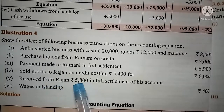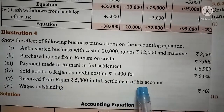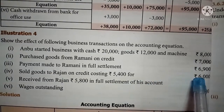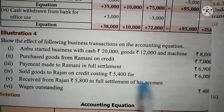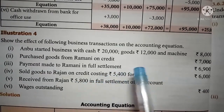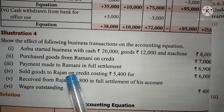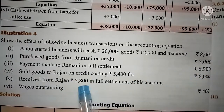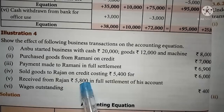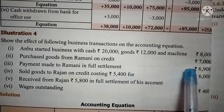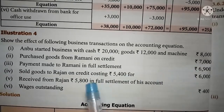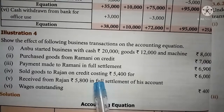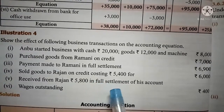Cash is received from Rajan rupees 5,800 in full settlement of his account. We already sold goods to Rajan for 6,000, but we are receiving only 5,800 as cash. The difference of 200 rupees is assumed as discount allowed. In the debtor column, subtract 6,000; in the cash column, add 5,800; and in the capital column, minus 200 for the discount allowed.